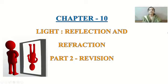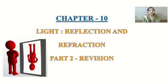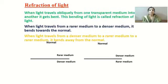Hello children, we are revising chapter number 10: Light Reflection and Refraction. In the previous video lesson we discussed about the reflection part of the lesson. Today we are going to continue with refraction of light. When light travels obliquely from one transparent medium to another, it gets bent, and this bending of light is called refraction of light.